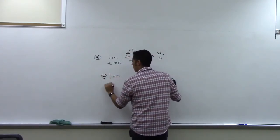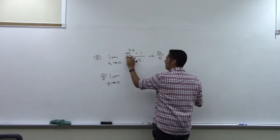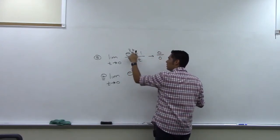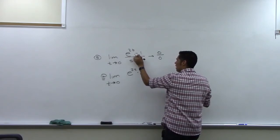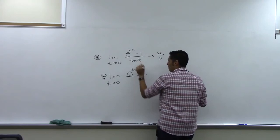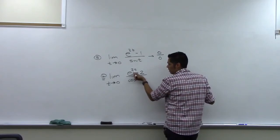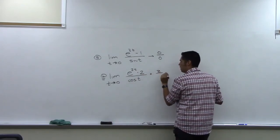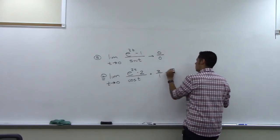Applying L'Hôpital's rule: the derivative of e^(2t) is itself times the chain rule derivative of 2t, which is two — giving 2e^(2t). The derivative of negative one is zero, so the numerator is 2e^(2t). The derivative of sine t is cosine t. Letting t go to zero: e to the zero is one, so the top is two times one, which is two. Cosine of zero is one, so we get two over one, which is two.